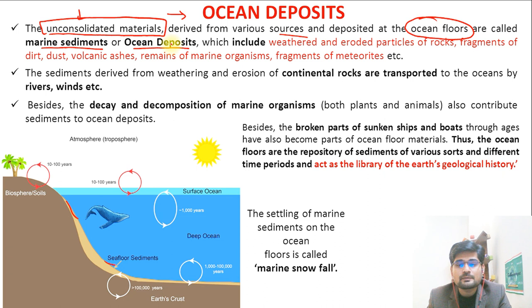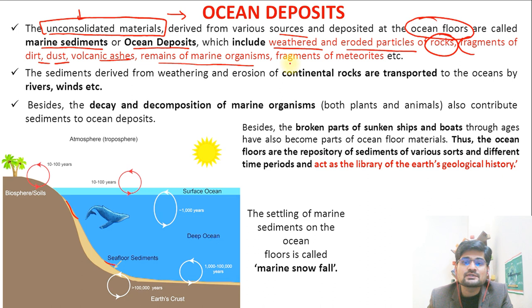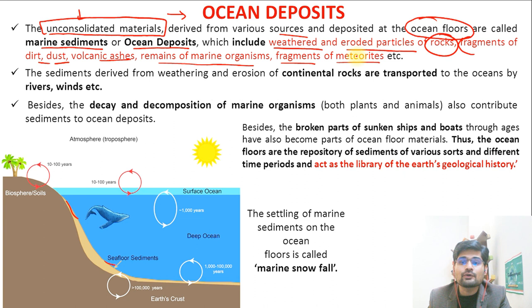They include weathered and eroded particles of rocks, fragments of dirt, dust, volcanic ashes, remains of marine organisms, and fragments of meteorites. These are the larger materials that are part of this unconsolidated material we call ocean deposits. These sediments are derived from the process of weathering and erosion, which we have already discussed in geomorphology.